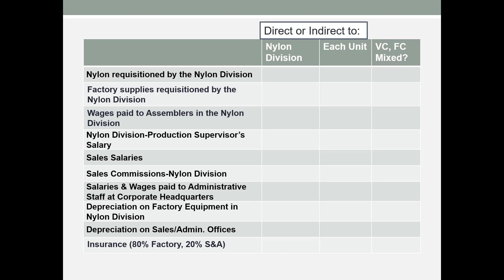Nylon requisitioned by the nylon division represents the nylon used in that division, so it is directly traceable to that division. Being a direct material, we would consider it generally traceable to each unit as well. It also varies directly with production — the more you produce, the more nylon you use — so it is a variable cost.